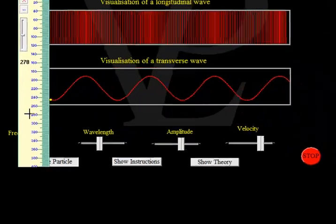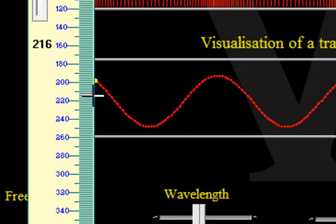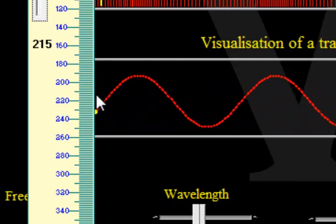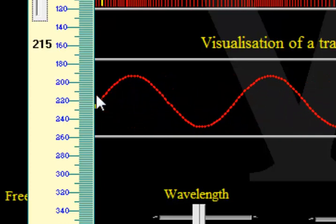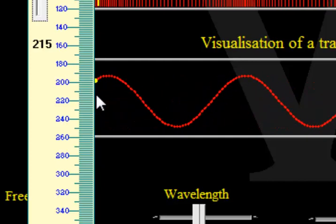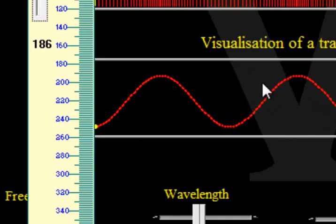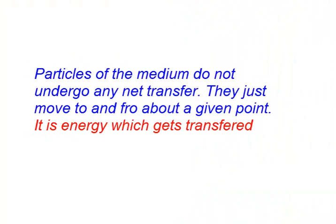But we can tell that if we put a ruler just next to it, you can see all it does is that it moves up and down, up and down, about a certain particular position. You'll see that it is moving to and fro about that particular position. So the particles of the medium do not undergo any net transfer — they just move to and fro about that particular point. It is the energy which gets transferred. The particles of the medium do not undergo any net transfer.